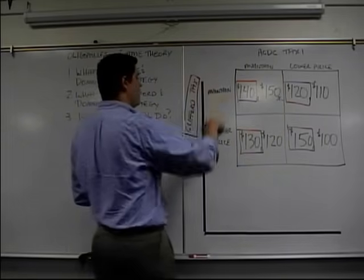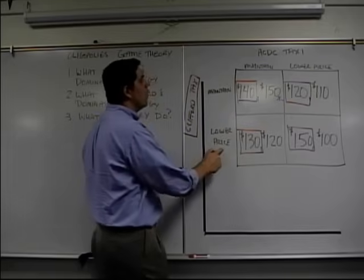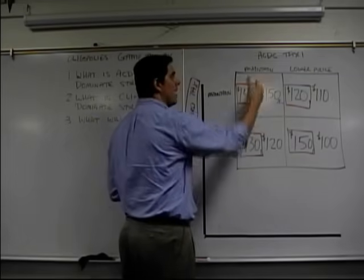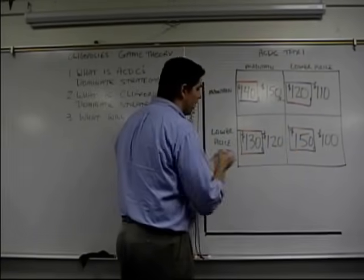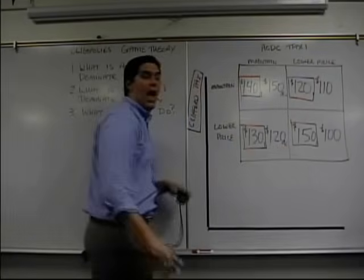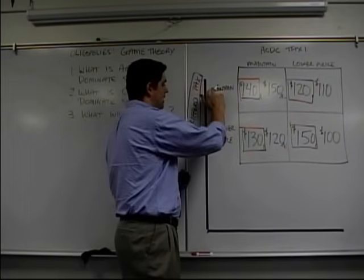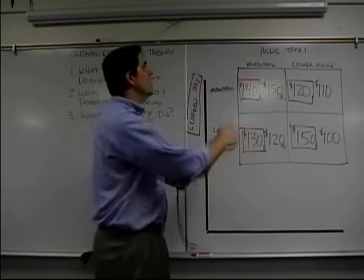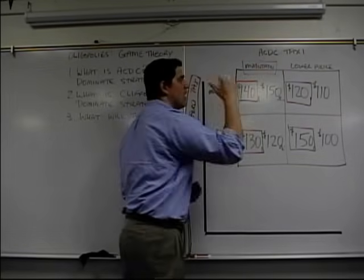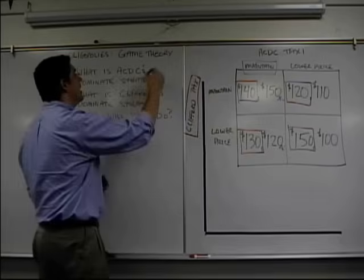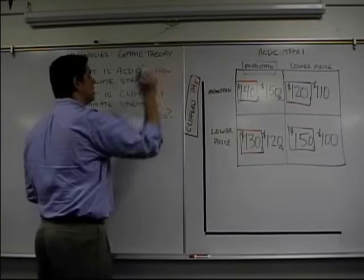Good. Now, how about if, in this situation, Clifford Taxi decides to lower, which one should ACDC do? Should they maintain and get 120 or should they lower and get 100? Well, 120 is better. Right here, they should lower. Now, in both cases, whether Clifford goes, maintains or lowers, they should definitely, ACDC should maintain. This is their dominant strategy. That ACDC's dominant strategy is to maintain. Done.